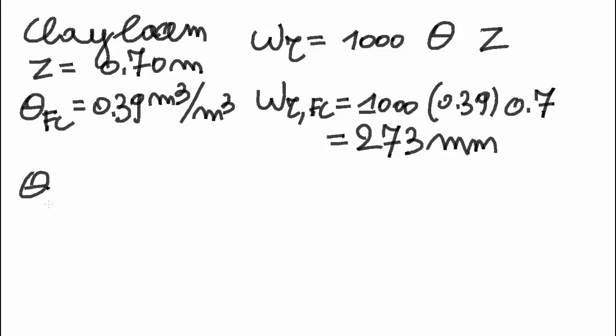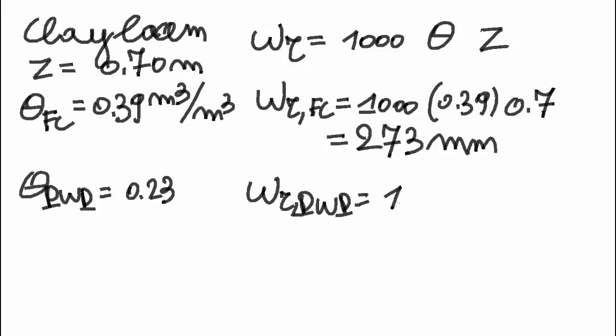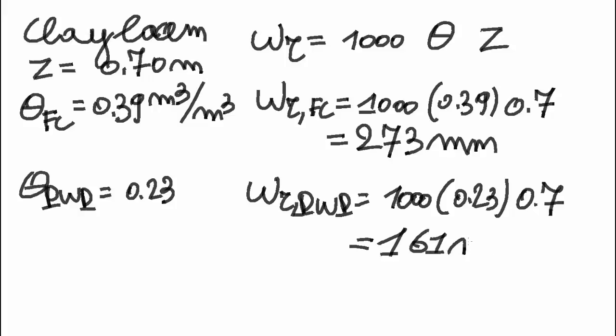If the water content at permanent wilting point is 0.23 cubic meters of water per cubic meter of soil, the water content in the root zone at permanent wilting point is 1000 times 0.23 times 0.7, which is 161 millimeters of water. A clay loam soil with a rooting depth of 0.7 meters at permanent wilting point will still have 161 millimeters of water. Nevertheless, the crop will wilt because the water is so strongly attached to the soil matrix that the roots cannot take up that water.